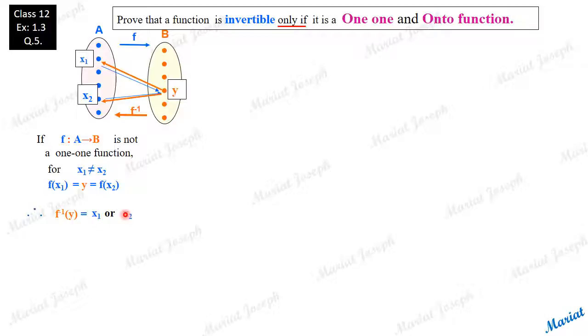Now see, if an element has more than one image, then that rule is not a function. For this f inverse to be a function, every element should have unique image. Here, y, this kind of a y is having two possible images, not unique image. So this reverse rule will not be a function.